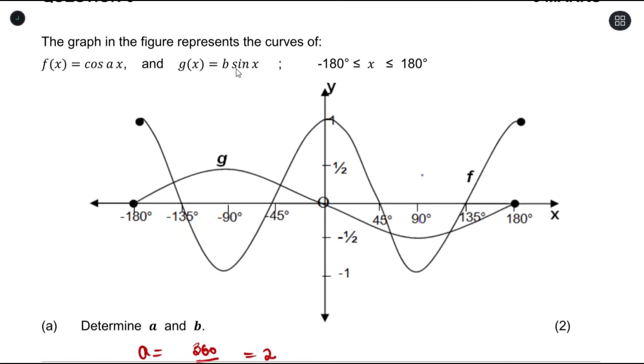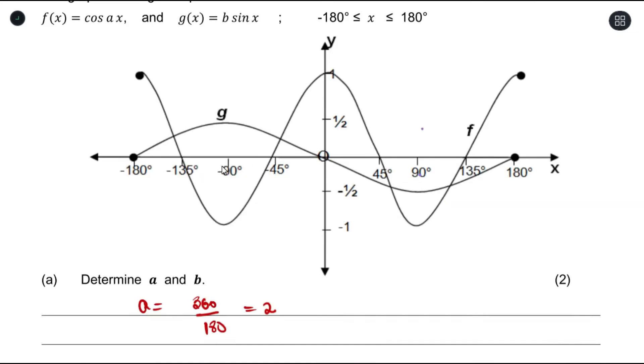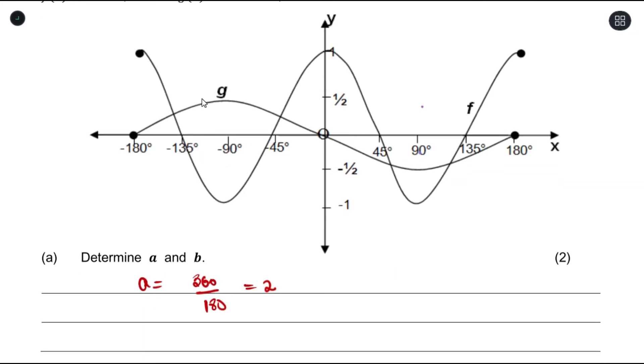For b, g(x) equals b·sin(x). So the b is your amplitude. Looking at our g, which is this graph, the sine graph, you can get your amplitude from the highest point minus the lowest point divided by 2.